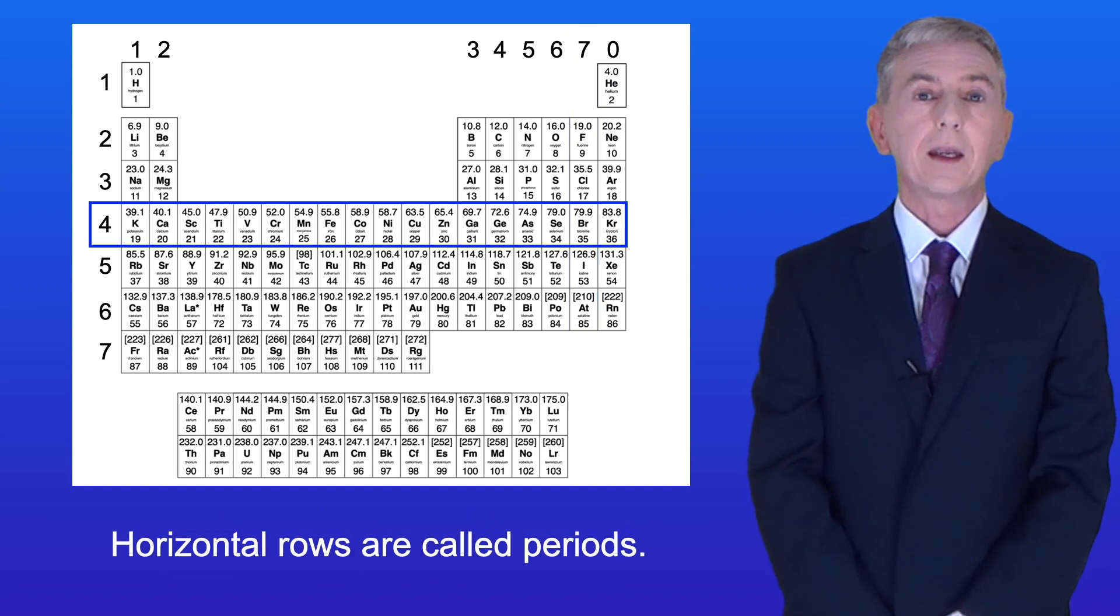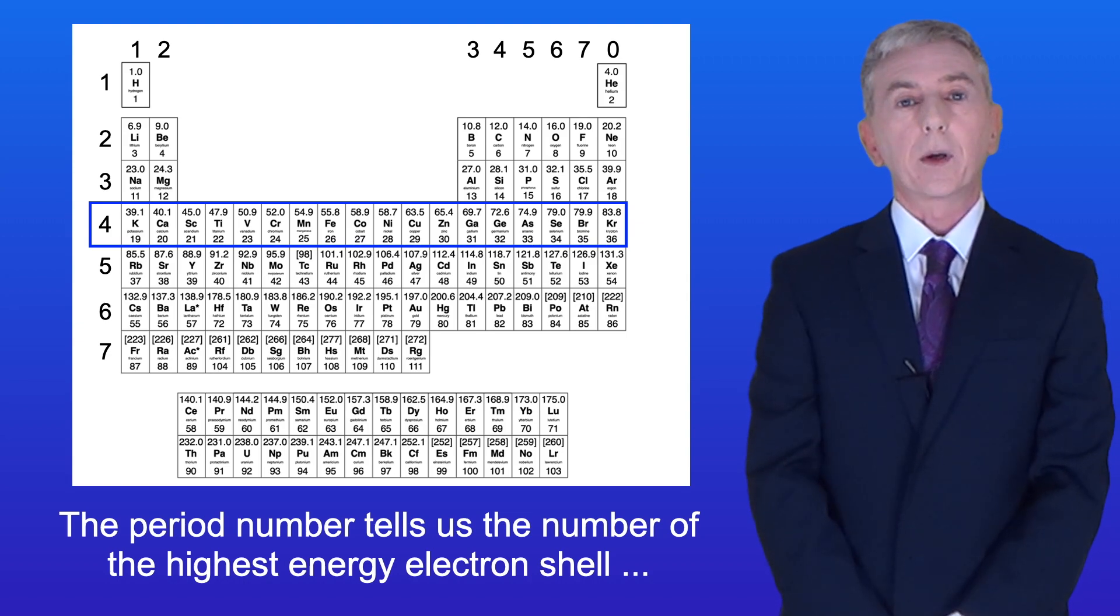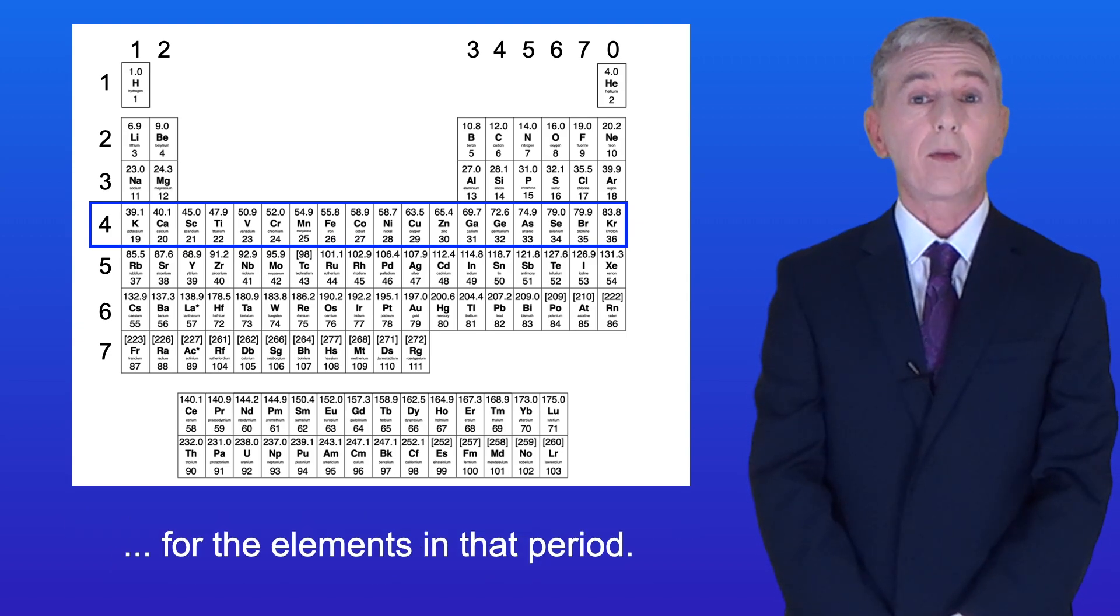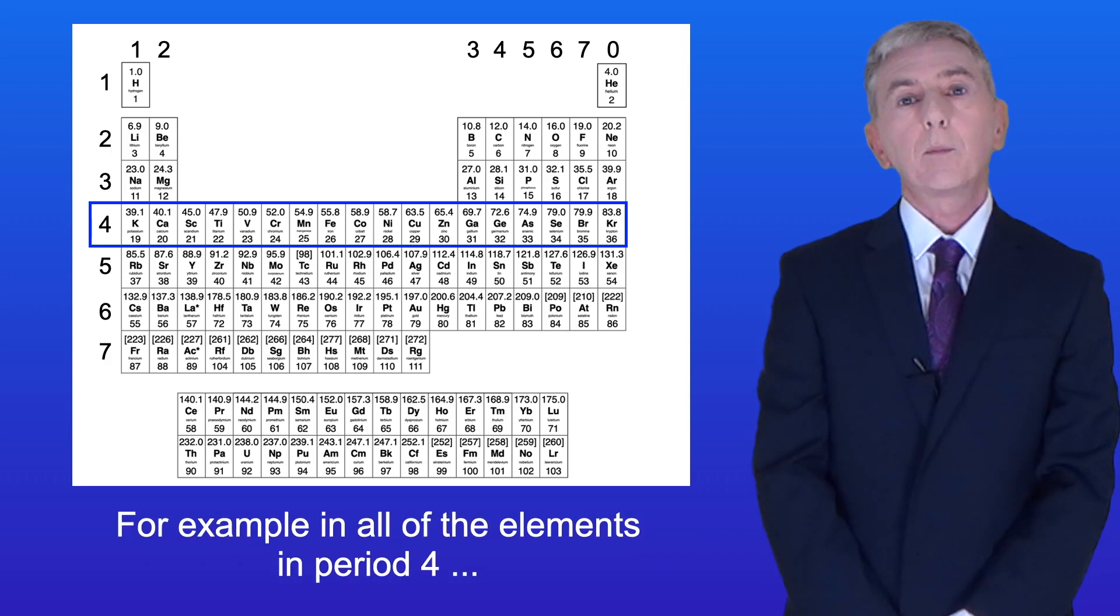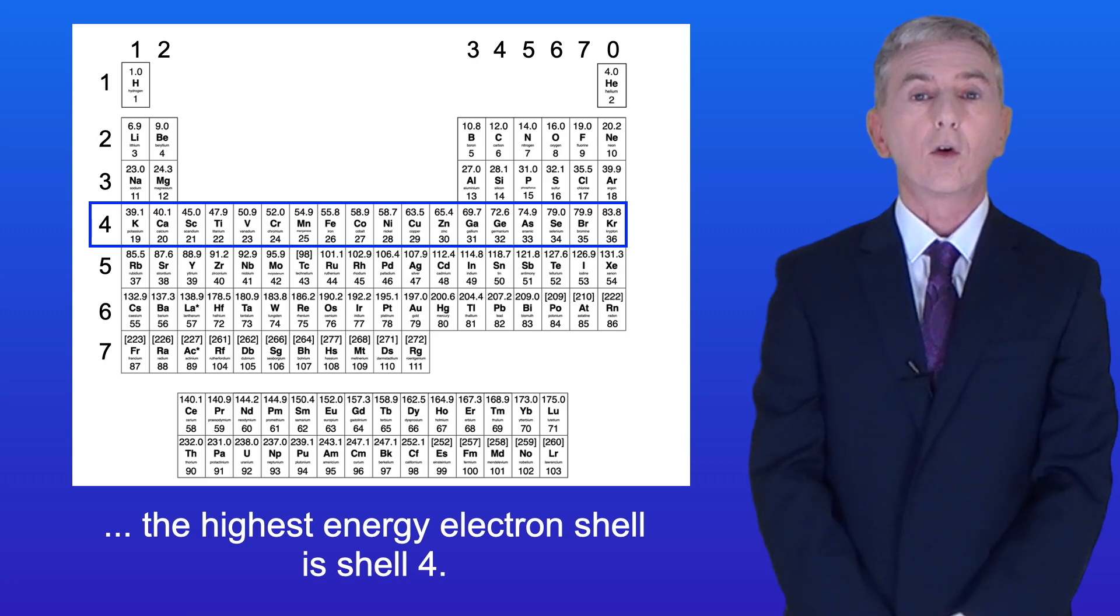Horizontal rows are called periods, and the period number tells us the number of the highest energy electron shell for the elements in that period. For example, in all of the elements in period 4, the highest energy electron shell is shell 4.